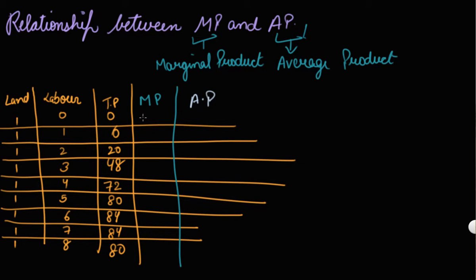Your marginal product will be: nothing, then 6 minus 0 = 6, then 20 minus 6 = 14, then 28, then 24, then 8, then 4, 0, and minus 4.